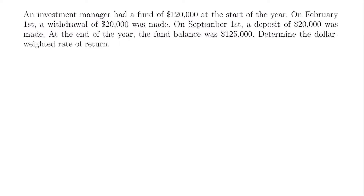In order to calculate the dollar-weighted rate of return, we need to make note of the initial balance of our fund, the ending balance of our fund, and all of the cash flows in between — whether that's a deposit or a withdrawal. In this case, we have both types: a withdrawal of $20,000 and a deposit of $20,000, both at different times throughout the year.